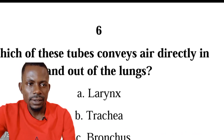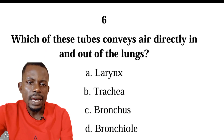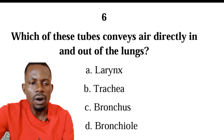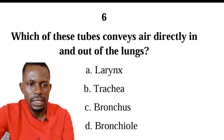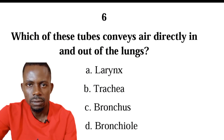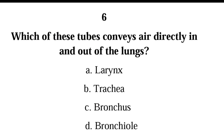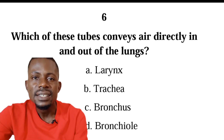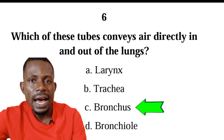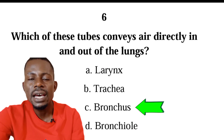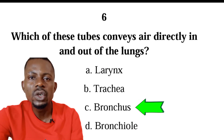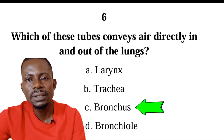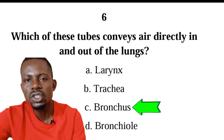Number six: which of these tubes conveys air directly in and out of the lungs? We have larynx, trachea, bronchus, or bronchial. The correct answer is C, bronchus. The bronchi are the tubes that receive air from the trachea into the lungs, and also receive air from the lungs into the trachea.